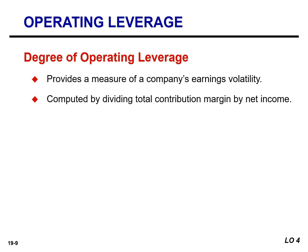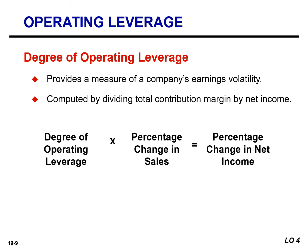The degree of operating leverage provides a measure of a company's earnings volatility and can be used to compare companies. The degree of operating leverage is calculated by dividing contribution margin by net income. Operating leverage acts as a multiplier. We can obtain the percentage change in net income by taking the degree of operating leverage and multiplying that by the percentage change in sales.